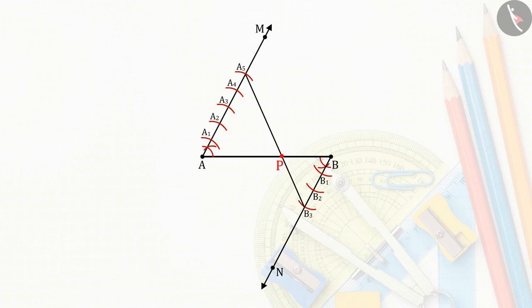Point P is where the line segment AB is divided in the ratio 5:3. Can you check the validity of this method?